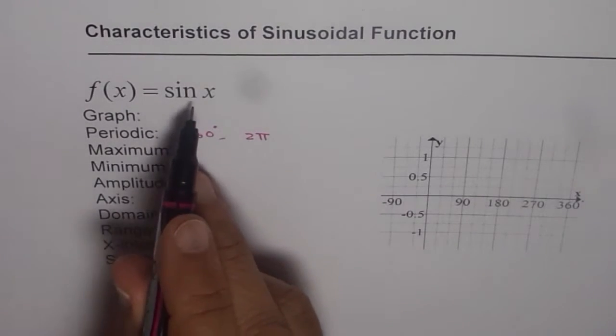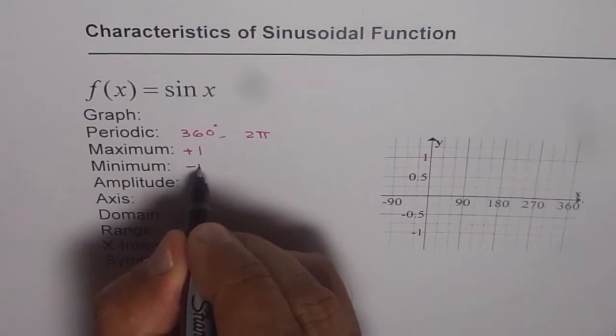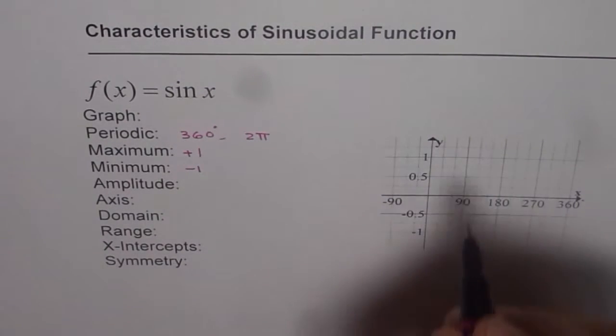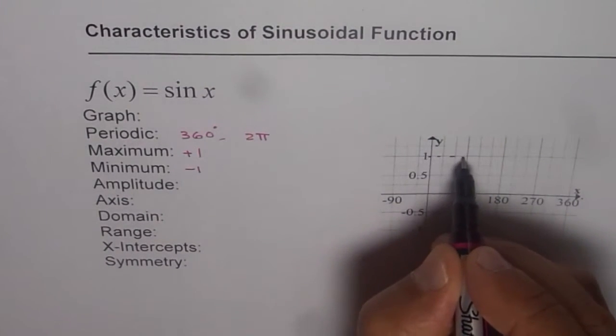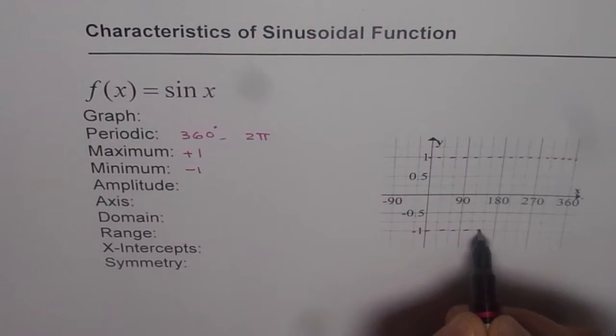Maximum value of sin x is plus 1, minimum value is minus 1. So that means that is the maximum for the function, which is plus 1 and the minimum is minus 1.